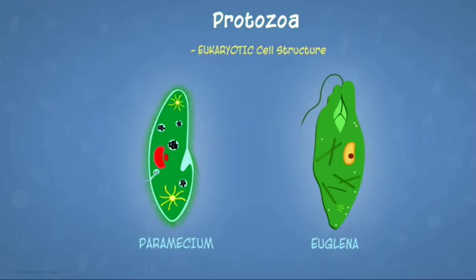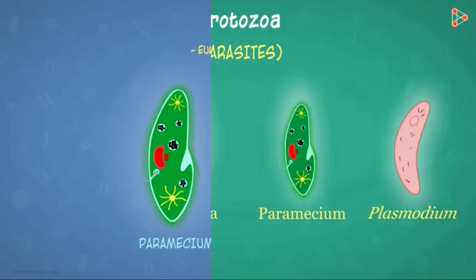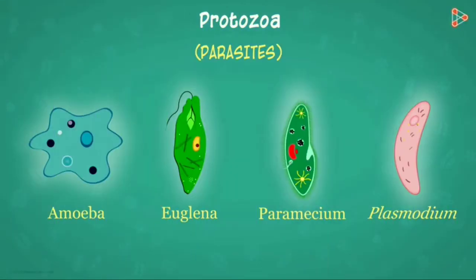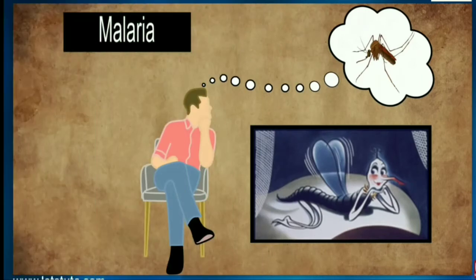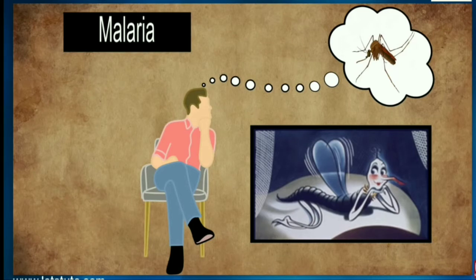Examples of protozoa include paramecium, euglena, amoeba, and plasmodium. They are protozoas and they are parasites. Many diseases are caused because of protozoa. One common disease is malaria, and people misinterpret or think that malaria is caused by the mosquito bite.